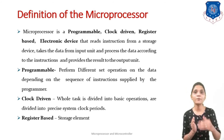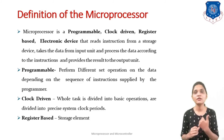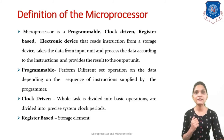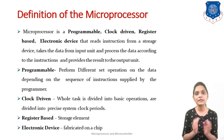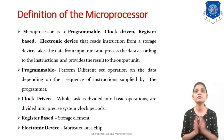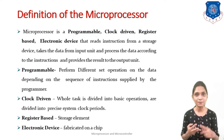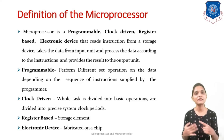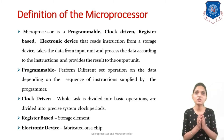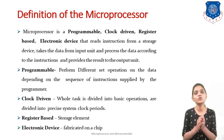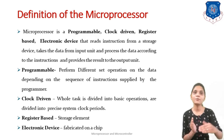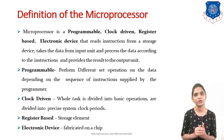The word 'register-based' is used because registers are used to store data while it is being processed. As it is an electronic device, all of these things are fabricated on a single chip, so we use the word 'electronic device.' So basically, a microprocessor is a programmable, clock-driven, register-based electronic device that reads instructions from memory, takes data from the input device, processes it, and provides the result to the output unit.